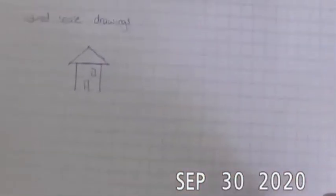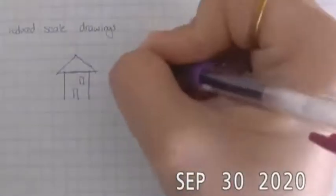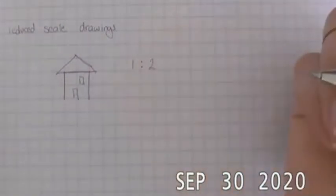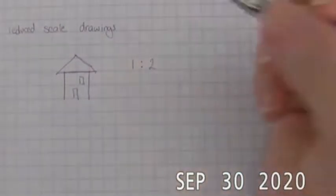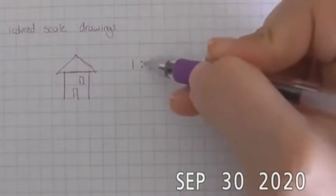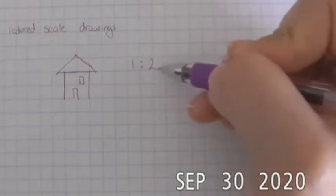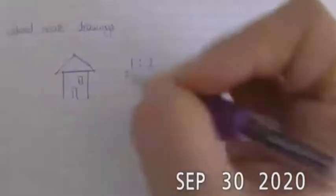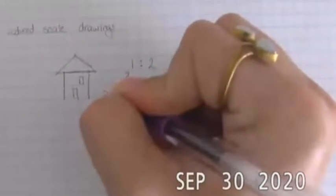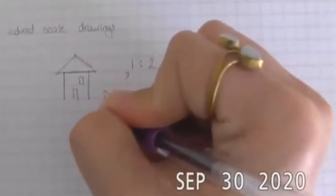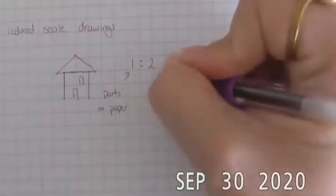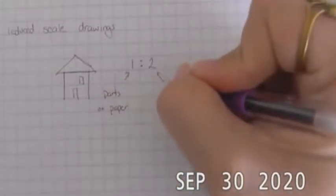When we're doing reduced-scale drawings, it is pretty common that you will see a ratio. We might remember from math class that a ratio is one number, a colon, which is two dots, and then another number. And this ratio tells us how many parts on paper represent how many parts in real life.